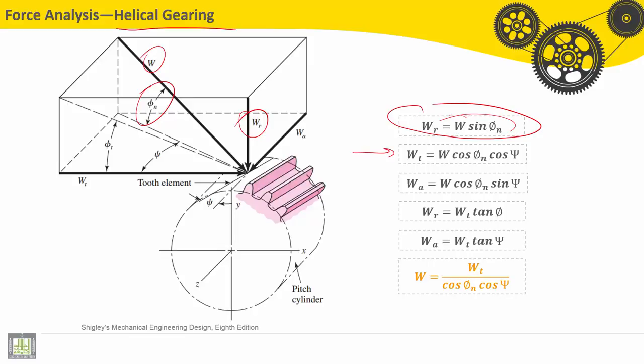Wt, the tangent force, is equal to the resultant force W into cosine phi n, cosine phi n. And the axial force Wa is equal to the resultant force W into cosine phi n into sine phi n.